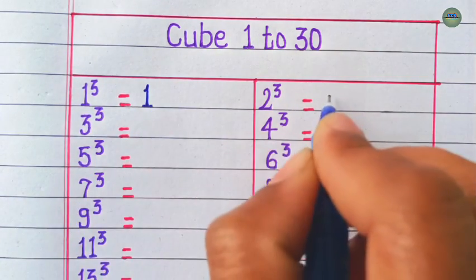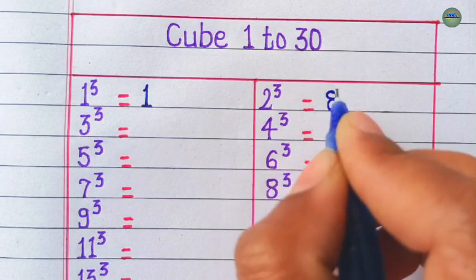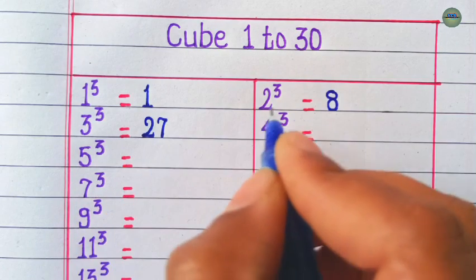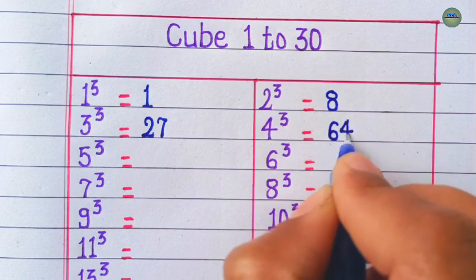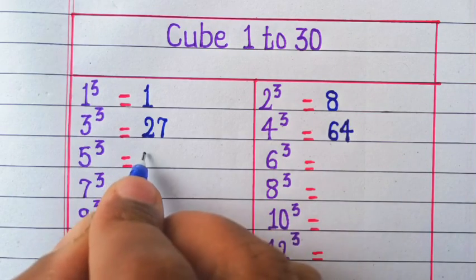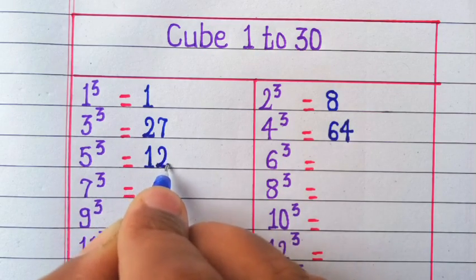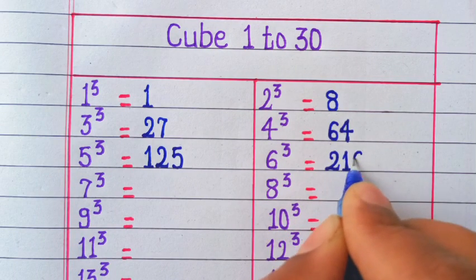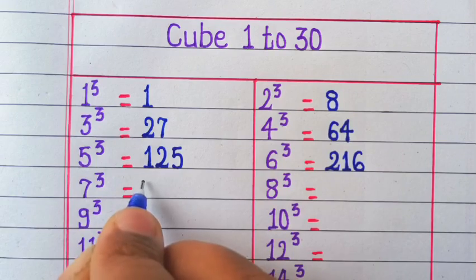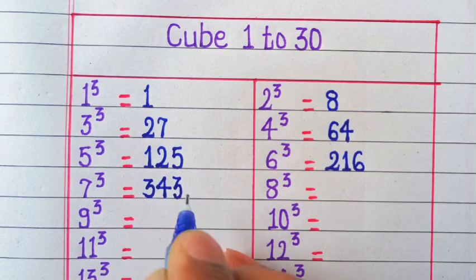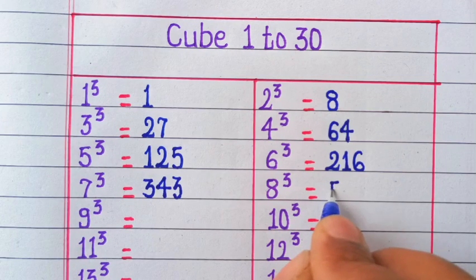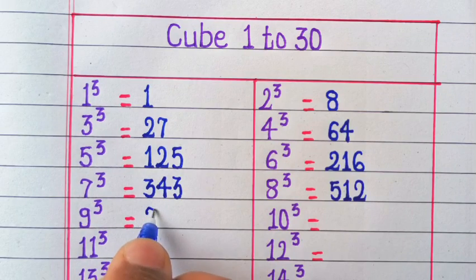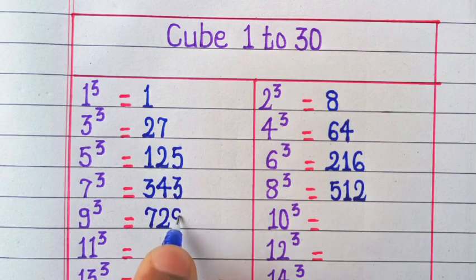1 cubed is 1, 2 cubed is 8, 3 cubed is 27, 4 cubed is 64, 5 cubed is 125, 6 cubed is 216, 7 cubed is 343, 8 cubed is 512, 9 cubed is 729.